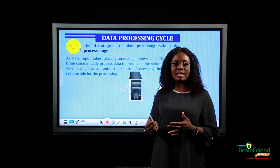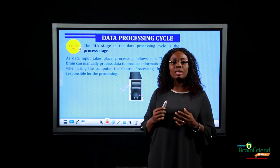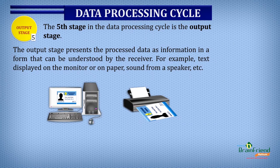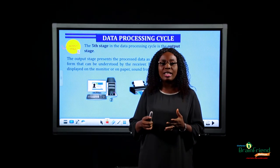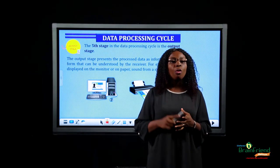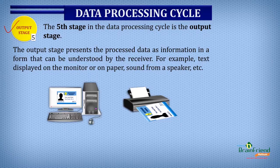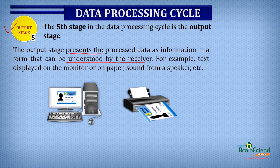After processing comes the output stage. Immediately after the process stage, at the output stage, we are no longer talking about data — we are now talking about information. At the output stage, what is being presented is information, presented in a form understood by the receiver. For example, the information can be displayed on the monitor or on paper, printed out, or heard from a speaker.